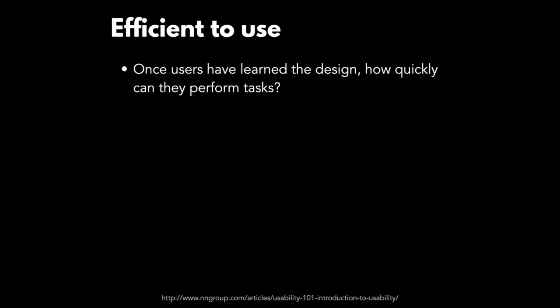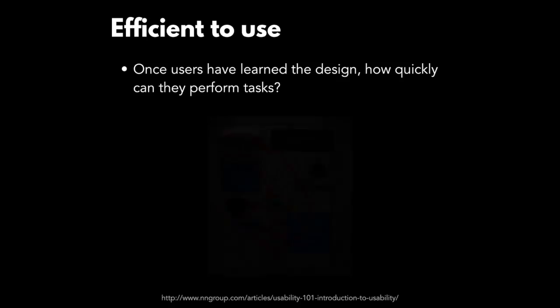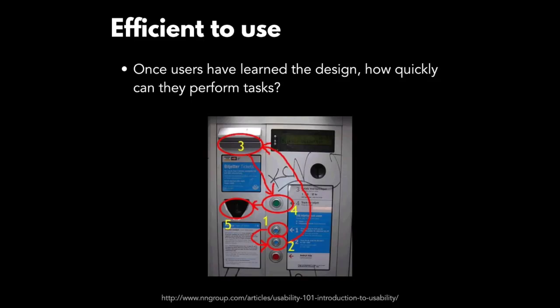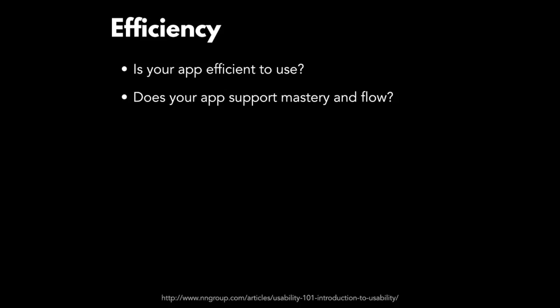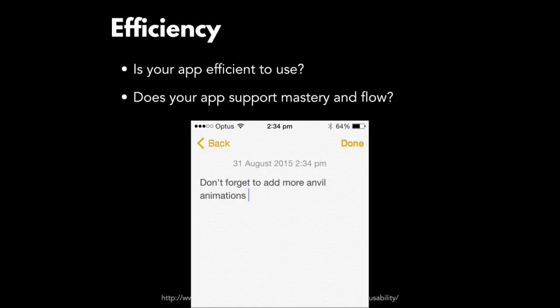Your application should also be efficient to use. Once users have learned the design, how quickly can they perform tasks? Here's a parking meter near me — probably one of the most inefficient designs I've ever seen. The procedure of steps is all over the place. You need to ask yourself: is your app efficient to use? Does your app support mastery and flow? For example, if I wanted to bold some text in the Notes app, I have to select it, drag down, then move across to bold — probably not the most efficient way to write a PhD thesis.